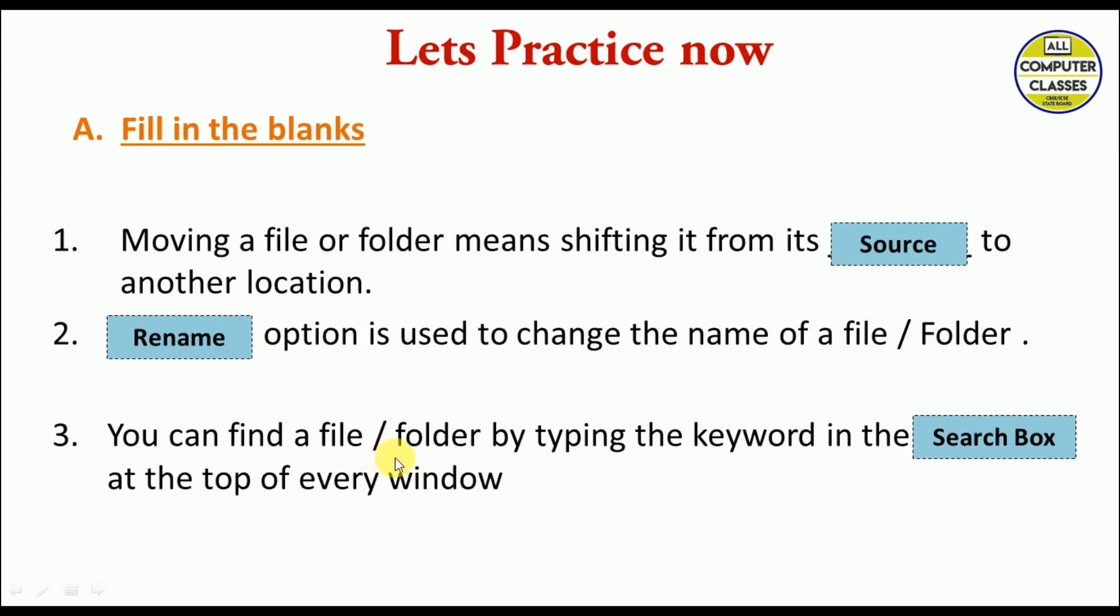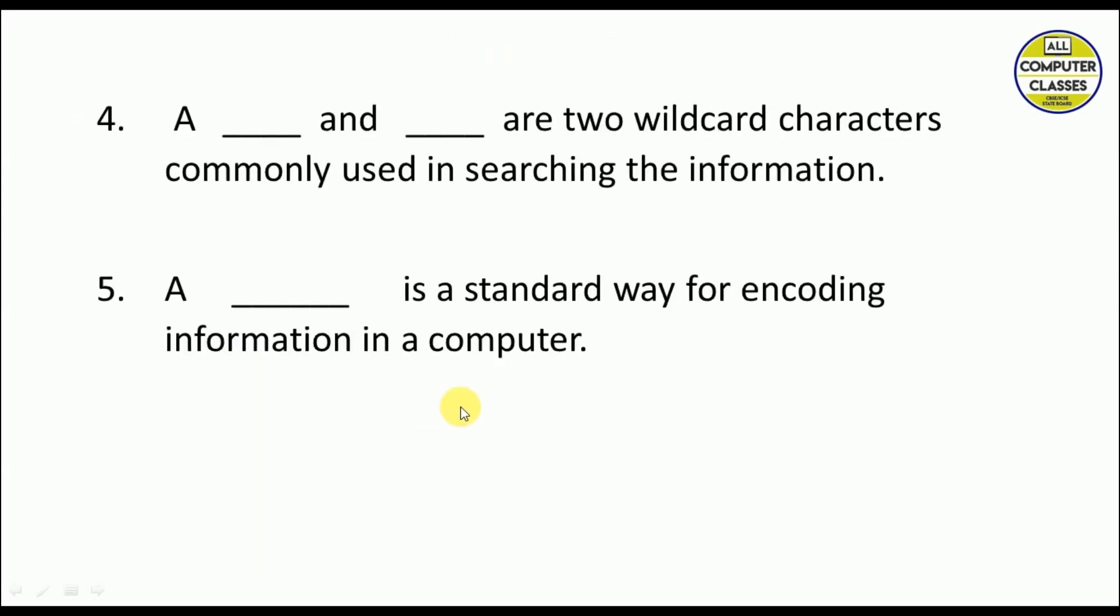A dash and dash are two wildcard characters commonly used in searching the information. We have this star and this question mark. These are the two wildcards that we use for finding or searching the files. A dash is a standard way of encoding information on a computer. So it's a file format. You always see a file name having the extension at the end with the dot. This is a standard way of encoding the information in a computer.